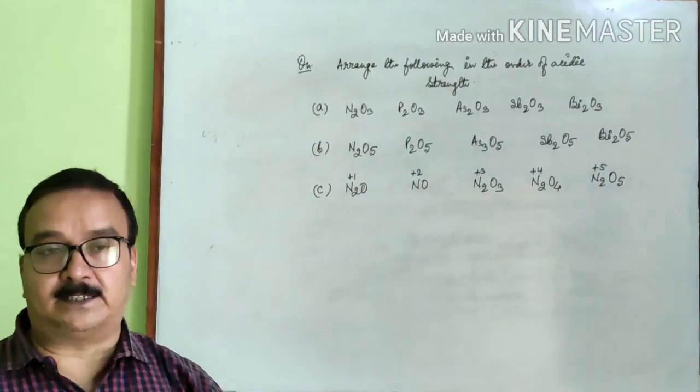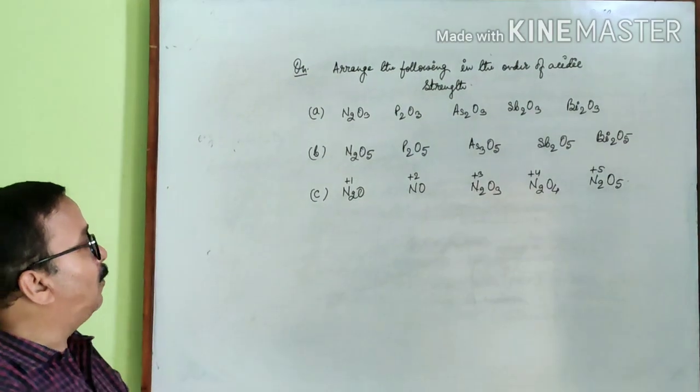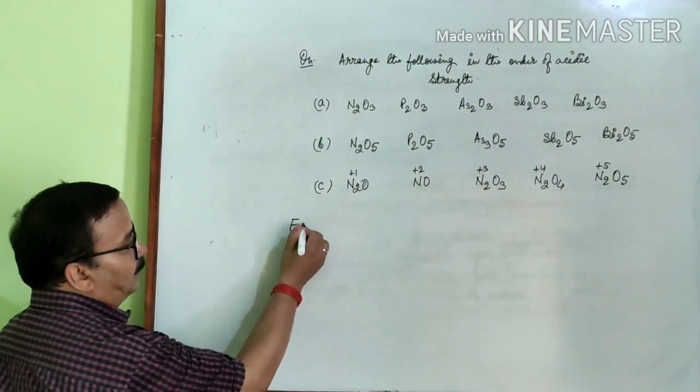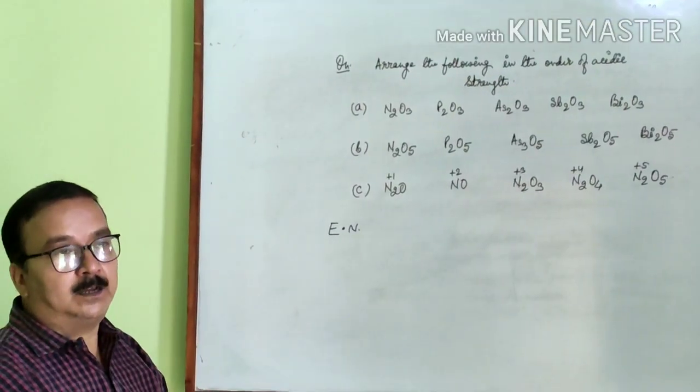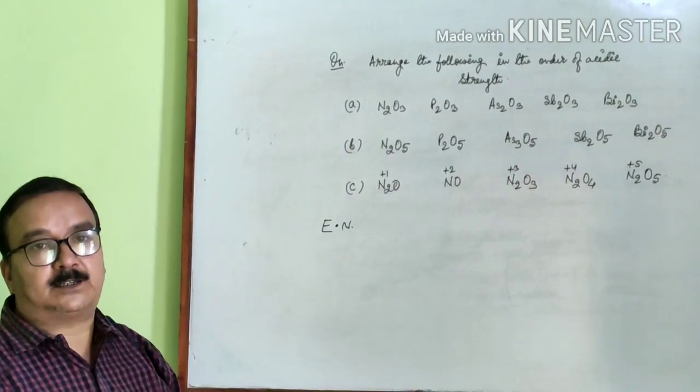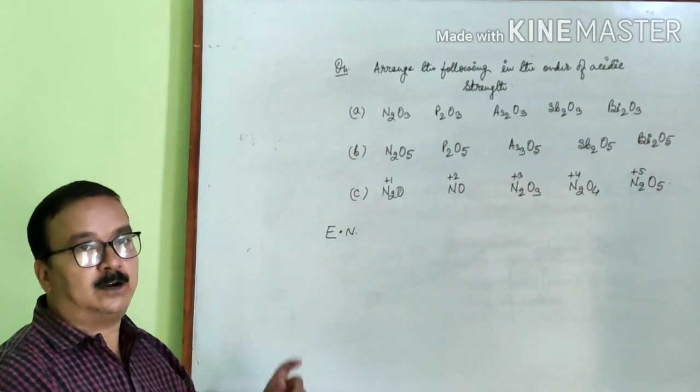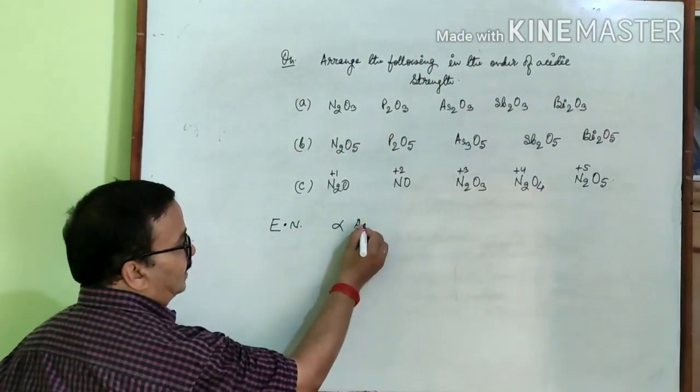Always remember that electronegativity of group 15 element, or we can say electronegativity of the central element in the oxides, is directly proportional to acidic nature.